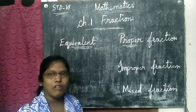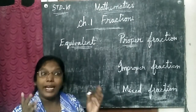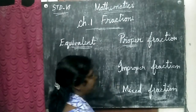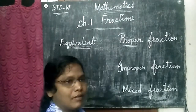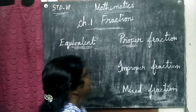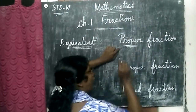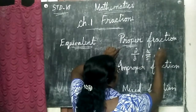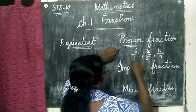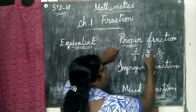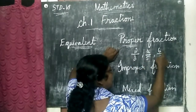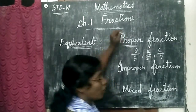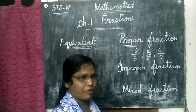Proper fraction means always the numerator will be lesser. See: two is lesser, three is greater; four is lesser, five is greater; six is lesser, seven is greater. When the numerator is smaller than the denominator, it is called proper fraction.